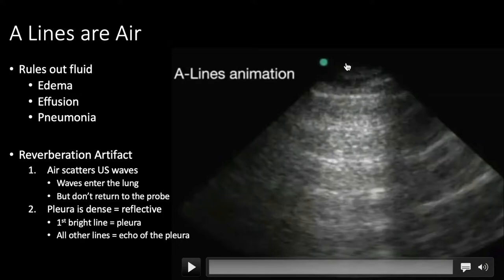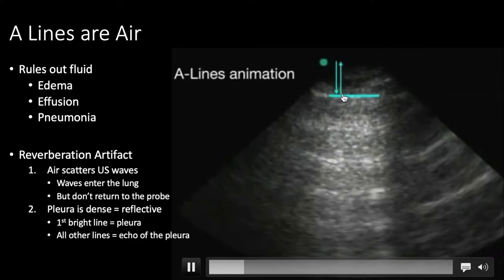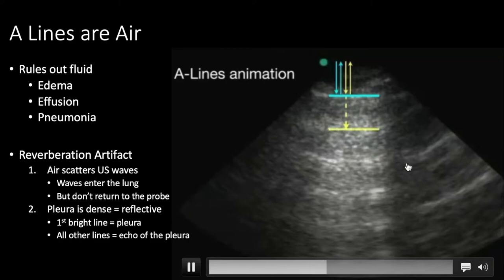A few of the ultrasound waves hit the pleura and bounce back to the probe repeatedly, because the pleura is very dense and reflective. So you get a few ultrasound waves trapped up here bouncing back and forth — this is the pleural line. But as these waves bounce back and forth, the machine thinks it's hearing pleura, pleura, pleura: it's an echo reverberation of a single ultrasound wave bouncing between the probe and the pleura. That's why A-lines are always equidistant — it's the same distance this wave is traveling, just an echo reverberation artifact.